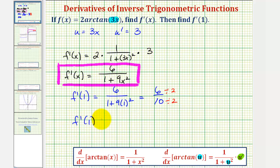So f prime of one equals three fifths, which is the slope of the tangent line at x equals one, which we'll now verify graphically.